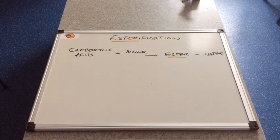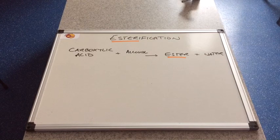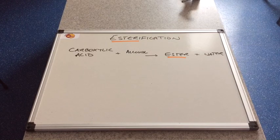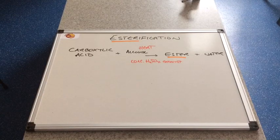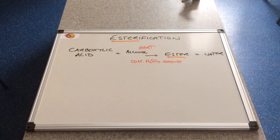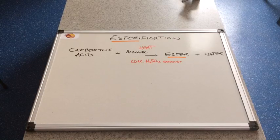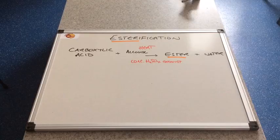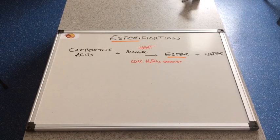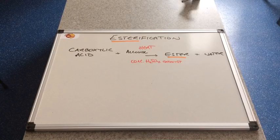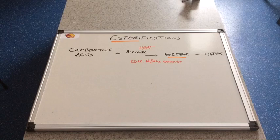The reactants are a carboxylic acid and an alcohol and the products are an ester and water. The reaction requires two conditions: heat and a catalyst is needed, and the most commonly used catalyst is concentrated H2SO4 which stands for sulphuric acid.